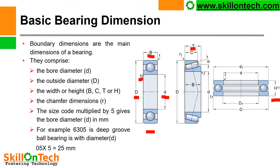The size code multiplied by 5 gives the bore diameter d in mm. For example, 6305 is a deep groove ball bearing — 05 × 5 = 25 mm, so the bore diameter will be 25 mm for the 6305 bearing.